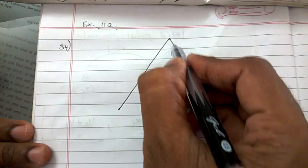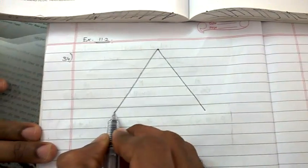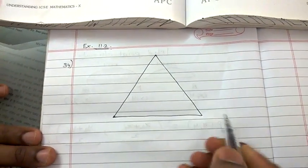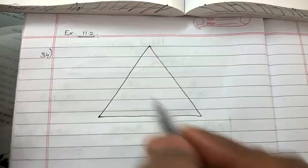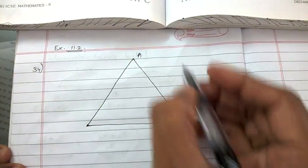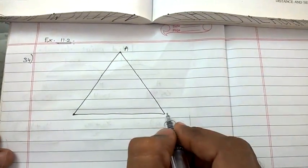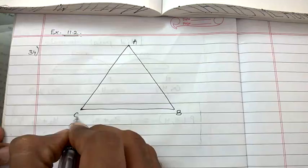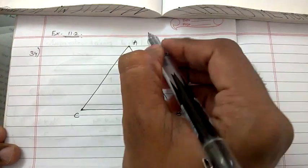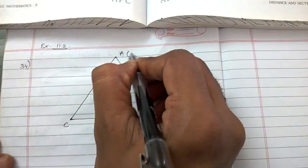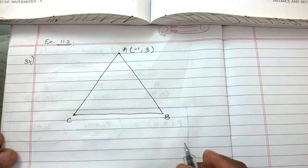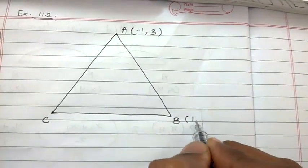We have to find the centroid of the triangle whose vertices are A, B, C. The coordinates of A are (-1, 3), coordinates of B are (1, -1)